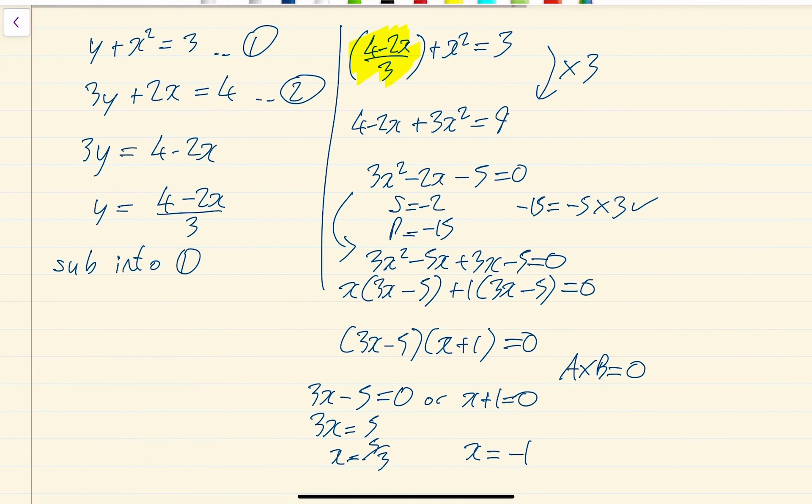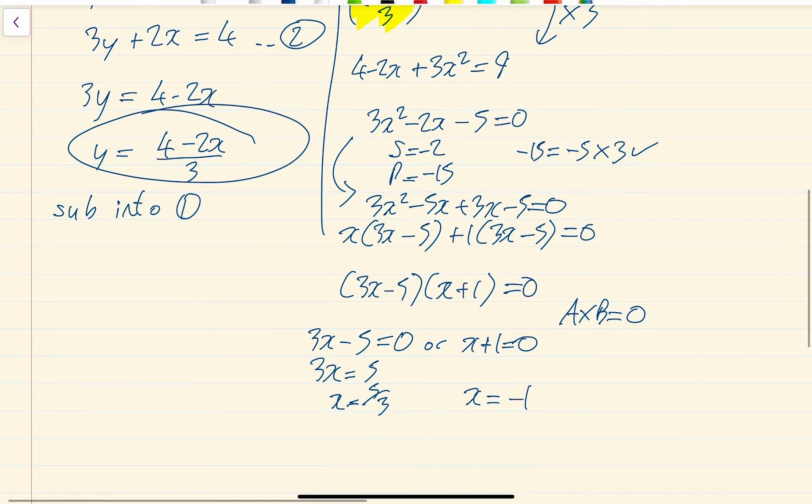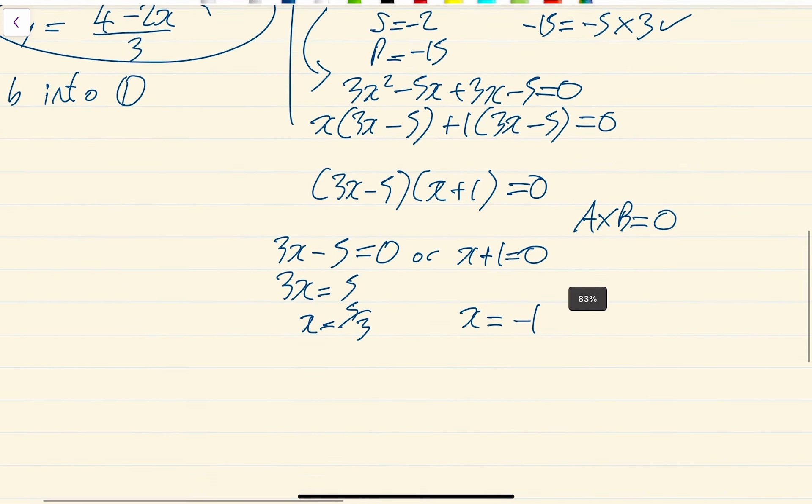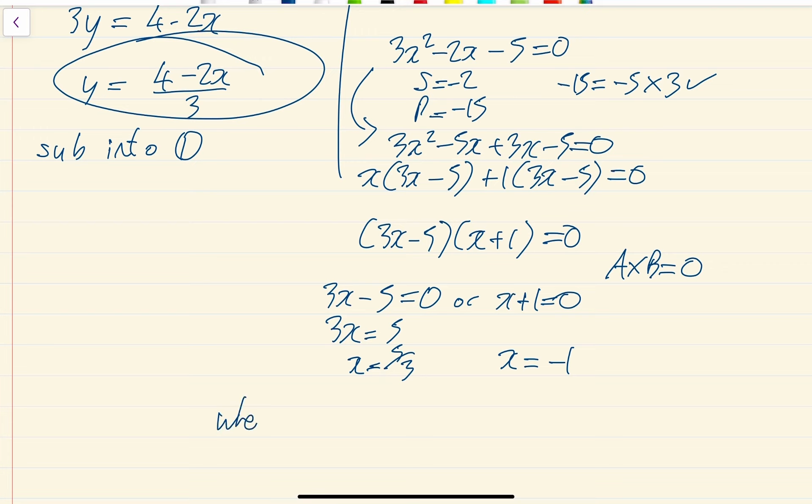And determine the coordinates. So we've got one of the coordinates, we've just got the x bit. So we're going to put our x values back into this equation. So when x equals 5 over 3, y is going to be equal to 4 minus 2 times 5 over 3, and then divide it by 3.